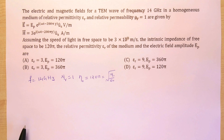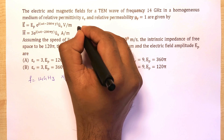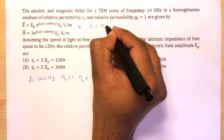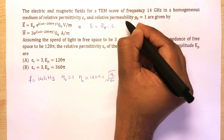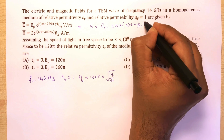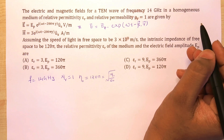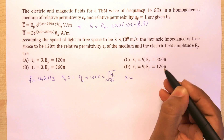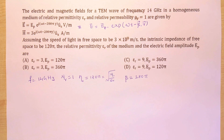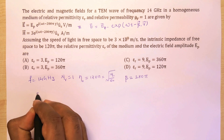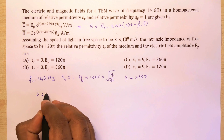The electric field for a TEM wave can be represented as E = Ep · exp(j(ωt − β·r)), where β is the wave vector. From the given field expressions, we can identify that the value of β in this question is 280π.